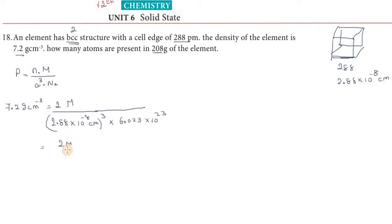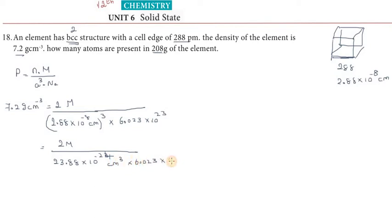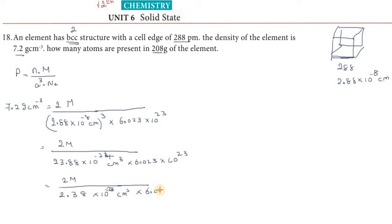Simplifying further: (2.88 × 10⁻⁸)³ = 23.88 × 10⁻²⁴ cm³. So the equation becomes: 7.2 = (2 × M) / (23.88 × 10⁻²⁴ × 6.023 × 10²³).